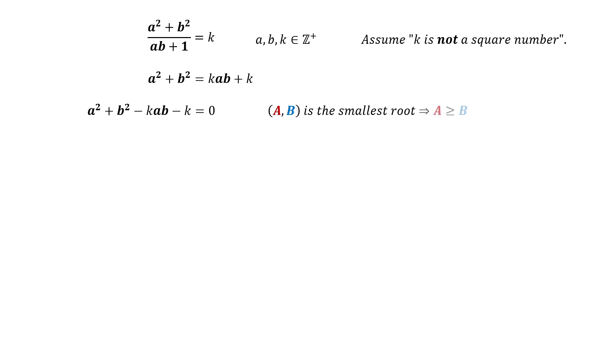Without loss of generality, we can consider A is greater than or equal to B. Then we can consider this as a quadratic equation in terms of A. This can be expressed as F of X equal X square minus KBX plus B square minus K equals 0. Quadratic equations have two roots. If A is one root, there must be another root, let's say A1.